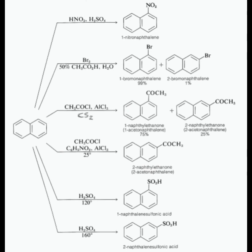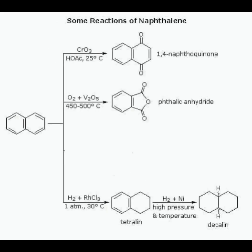The next reaction is sulfonation. Naphthalene sulfonated with sulfuric acid at a temperature of 120 degrees Celsius gives 1-naphthalene sulfonic acid, whereas sulfonation at 160 degrees Celsius gives 2-naphthalene sulfonic acid.